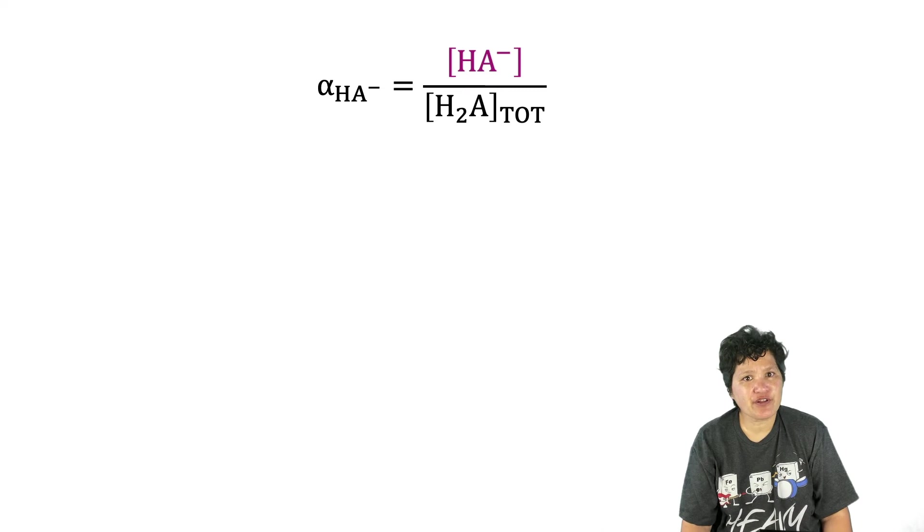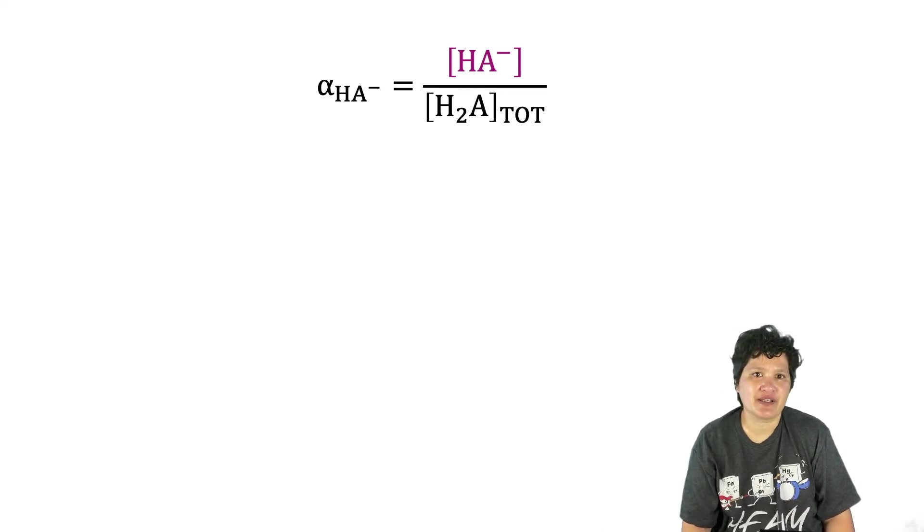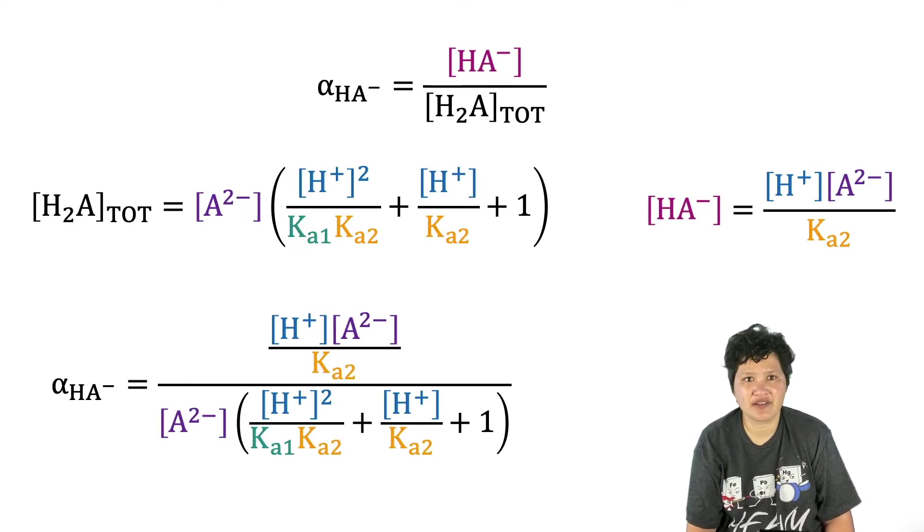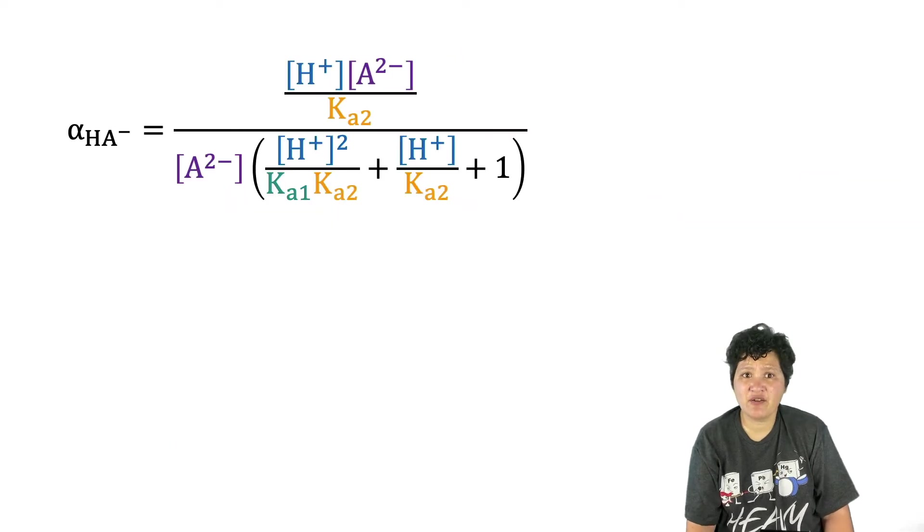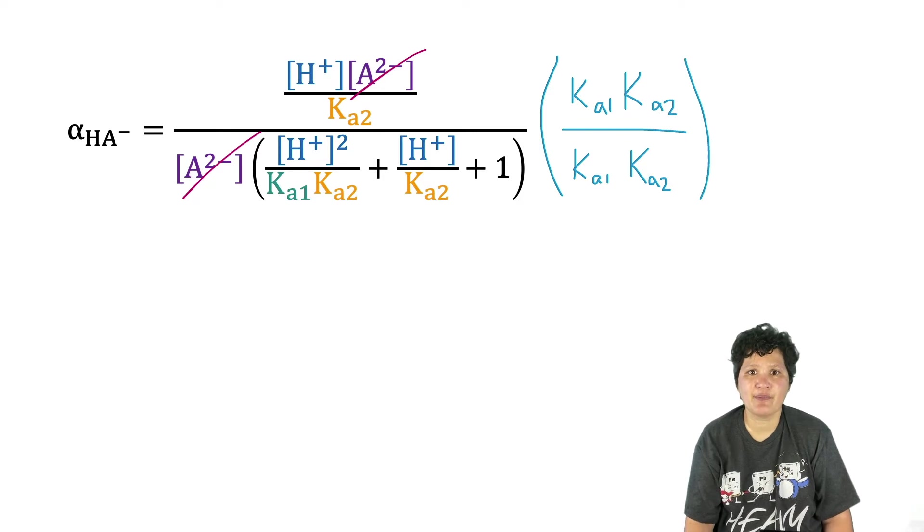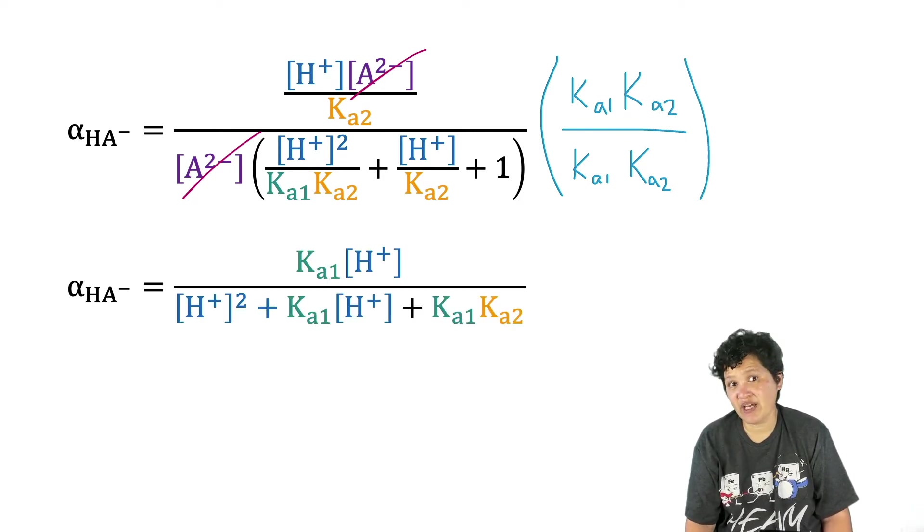We'll follow the same procedure for the fractional composition of HA minus. Again, we start with a definition and plug in our derived expressions, giving us a messy fraction that contains fractions. So again, we're going to simplify by canceling out the A2 minus concentrations in both numerator and denominator. And we're also going to get rid of the fractions within a fraction by multiplying both top and bottom by Ka1 and Ka2. When you do that, you get this expression.